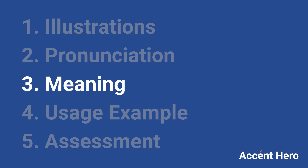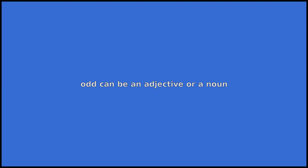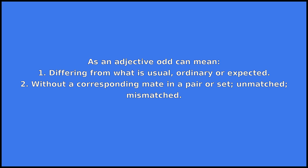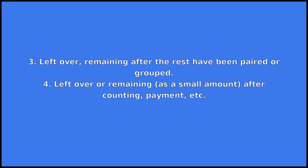Odd can be an adjective or a noun. As an adjective, odd can mean: 1. differing from what is usual, ordinary, or expected; 2. without a corresponding mate in a pair or set — unmatched, mismatched; 3. left over, remaining after the rest have been paired or grouped.